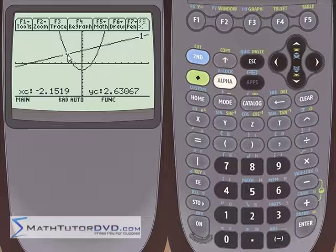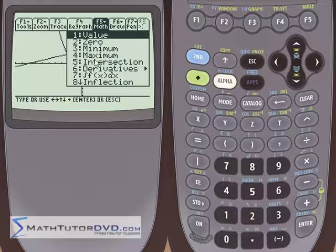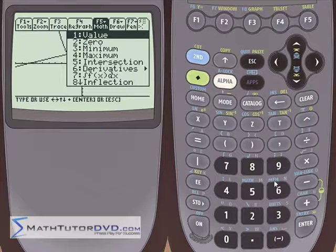In order to find an exact solution, you need to go back to the math menu. So we've already dealt with a lot of these functions. What we're going to look at right now is number five, intersection. So hit number five.